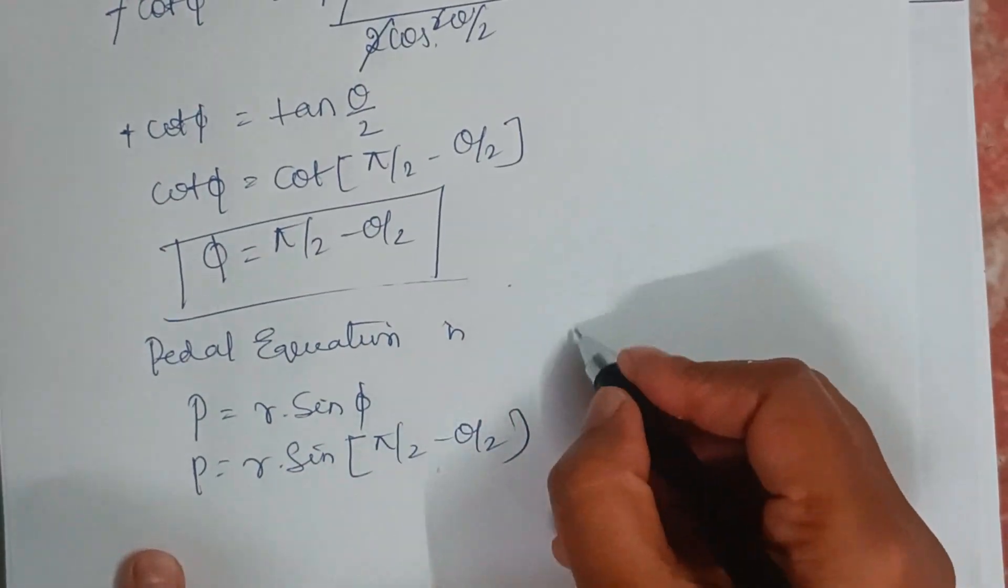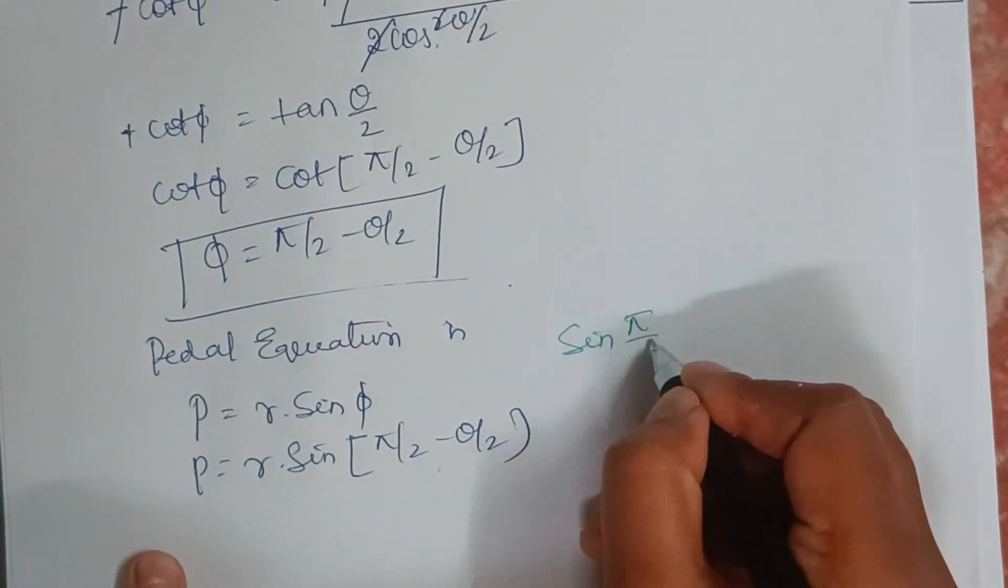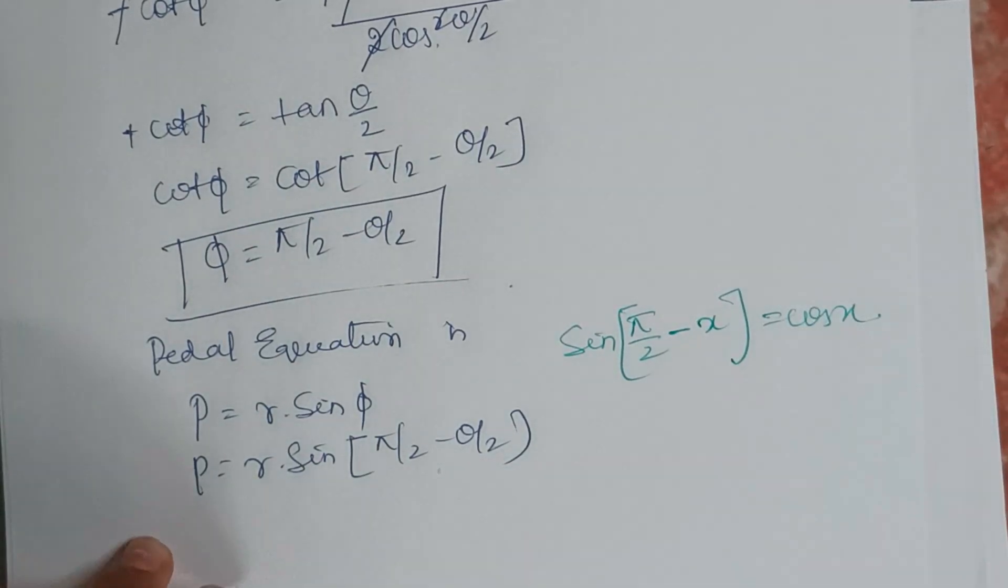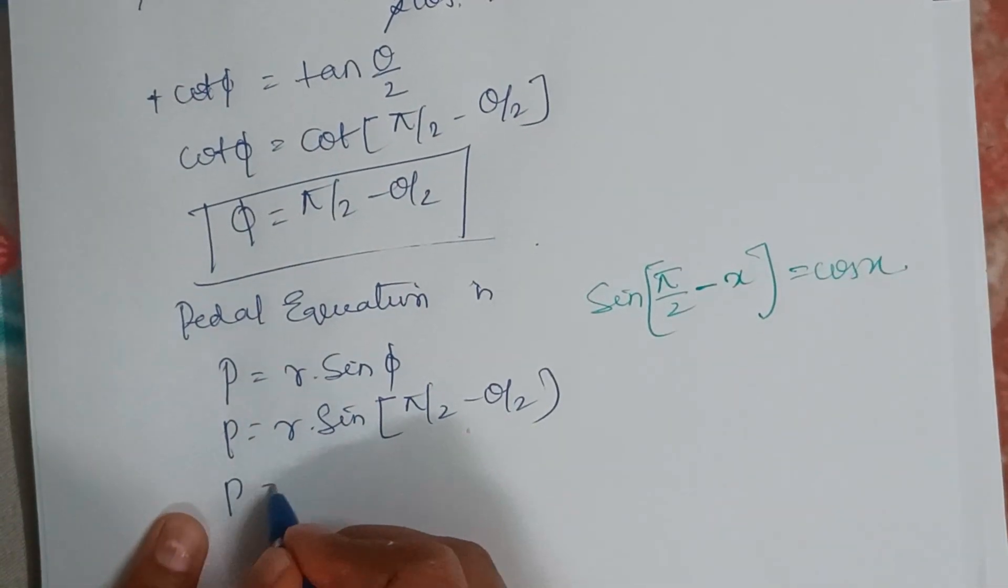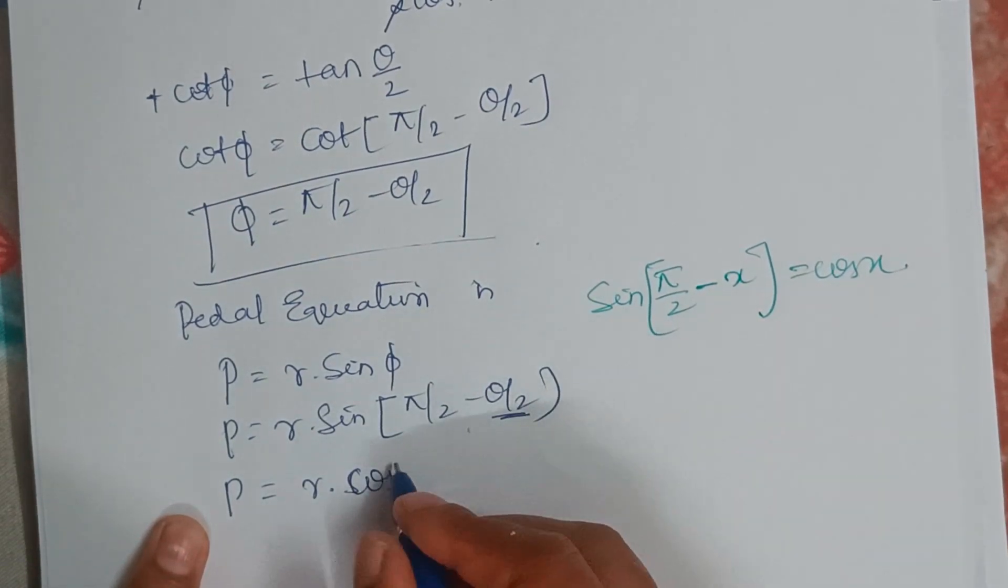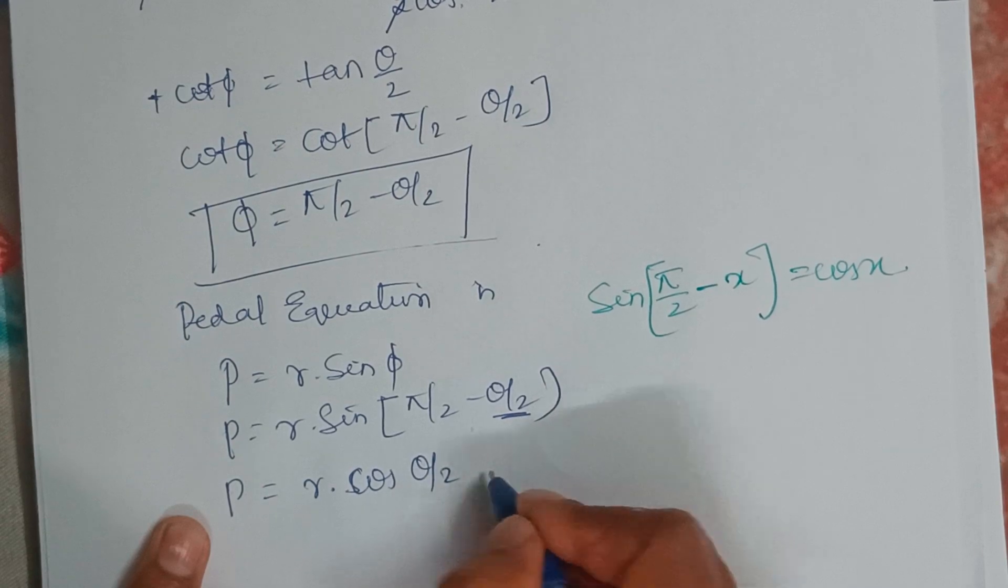And if you don't know, sin pi by 2 minus x equals cos x. So I can write it as P equals R into cos theta by 2.